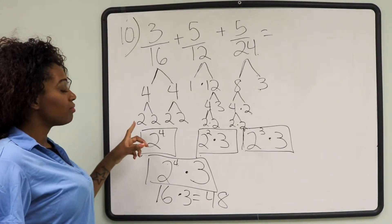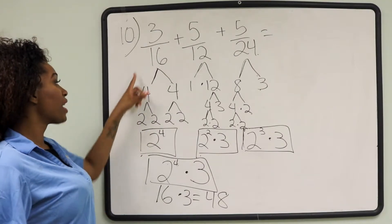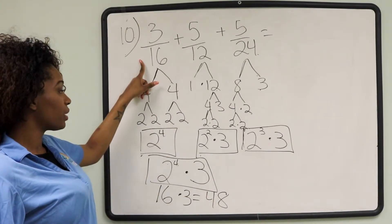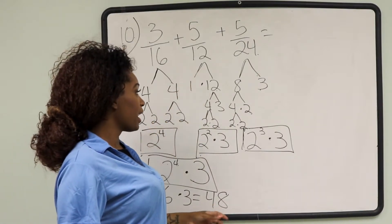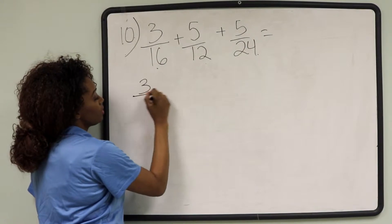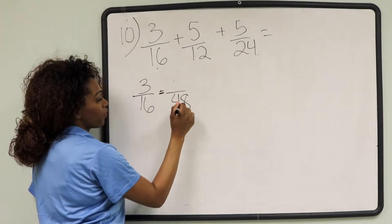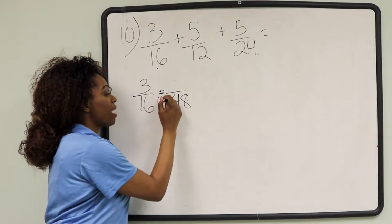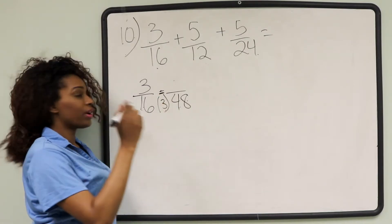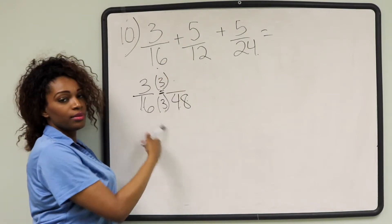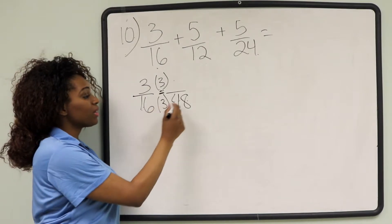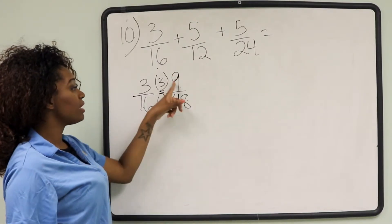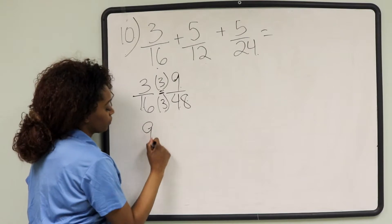Now that we know our least common denominator, we can change our fractions because each has to have the same denominator. We're going to change our denominator from 16 to 48, from 12 to 48, and from 24 to 48. To get from 16 to 48, you have to multiply by 3. Since we're multiplying the denominator by 3, you have to multiply the numerator by 3. Anything you do to the denominator, you have to do to the numerator as well. So 16 times 3 gives us 48, and 3 times 3 gives us 9. Our new fraction is now 9 over 48. We'll write that down here.